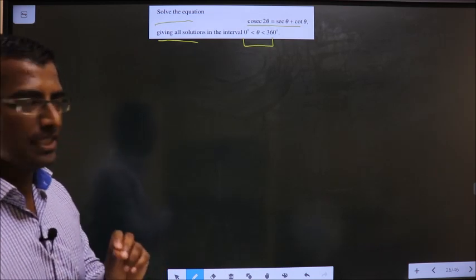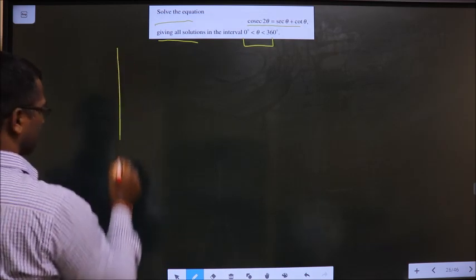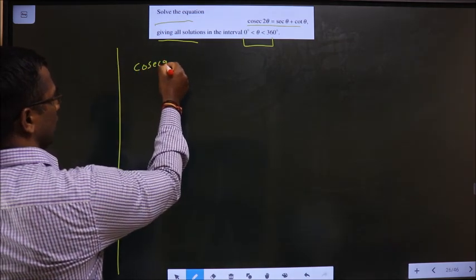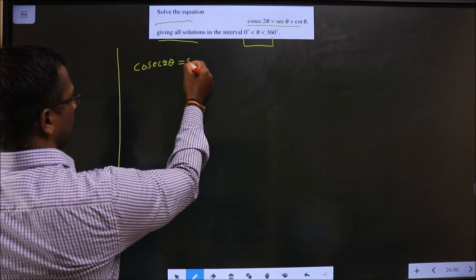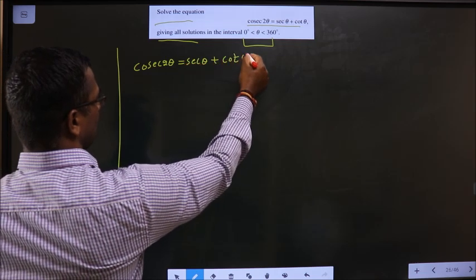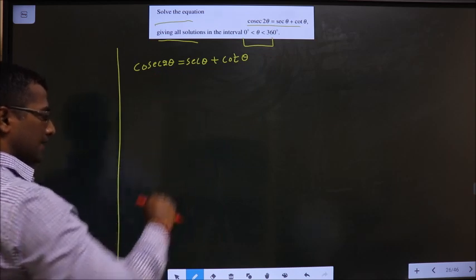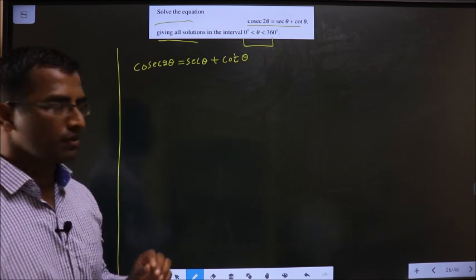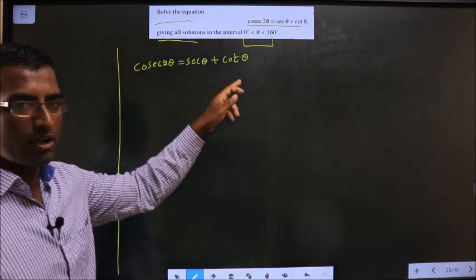The given equation is cosecant 2θ equal to secant θ plus cot θ. How do I simplify this? In step 1, change cosecant, secant, and cot.